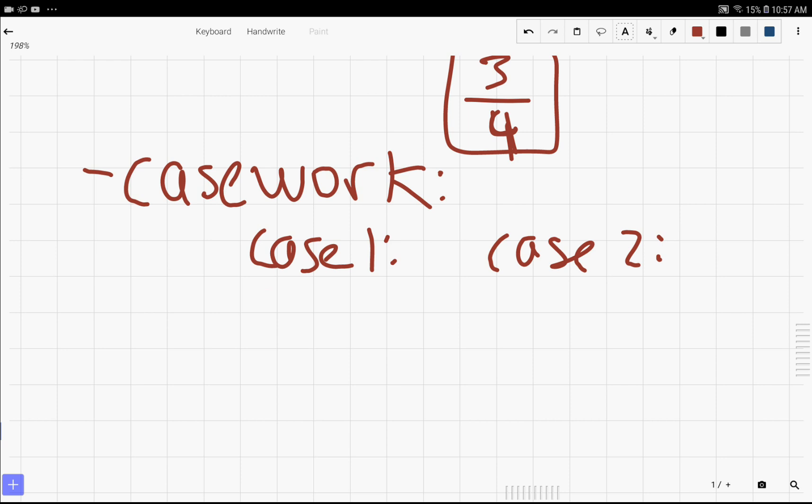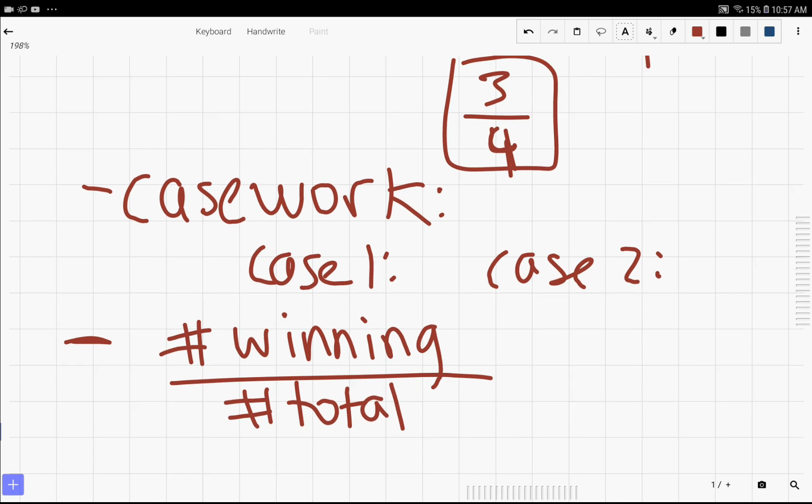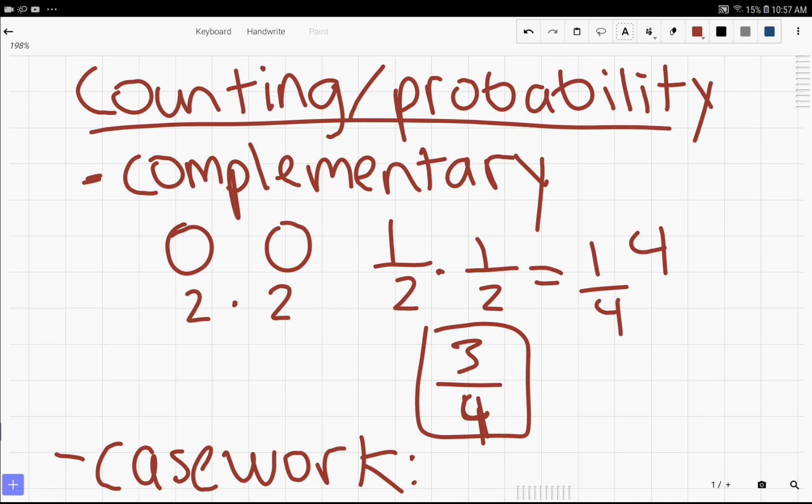The next one, which is probably also used a lot, is just the simple definition of probability: finding the number of winning possibilities over the number of total possibilities. Overall, that's simply counting and probability and the three methods you'll see used the most.